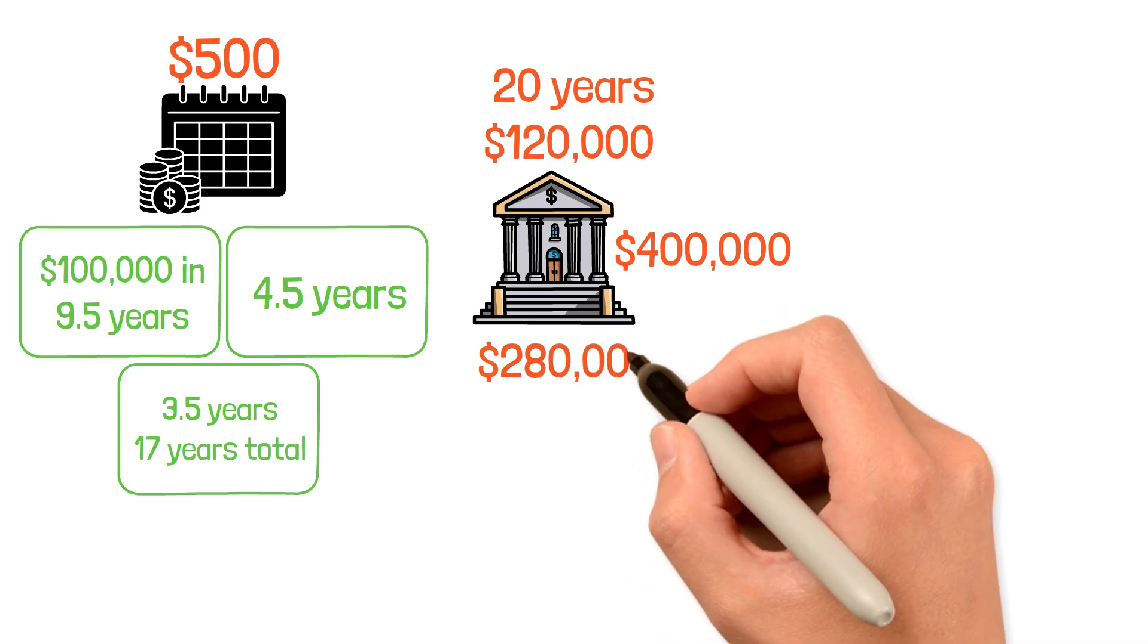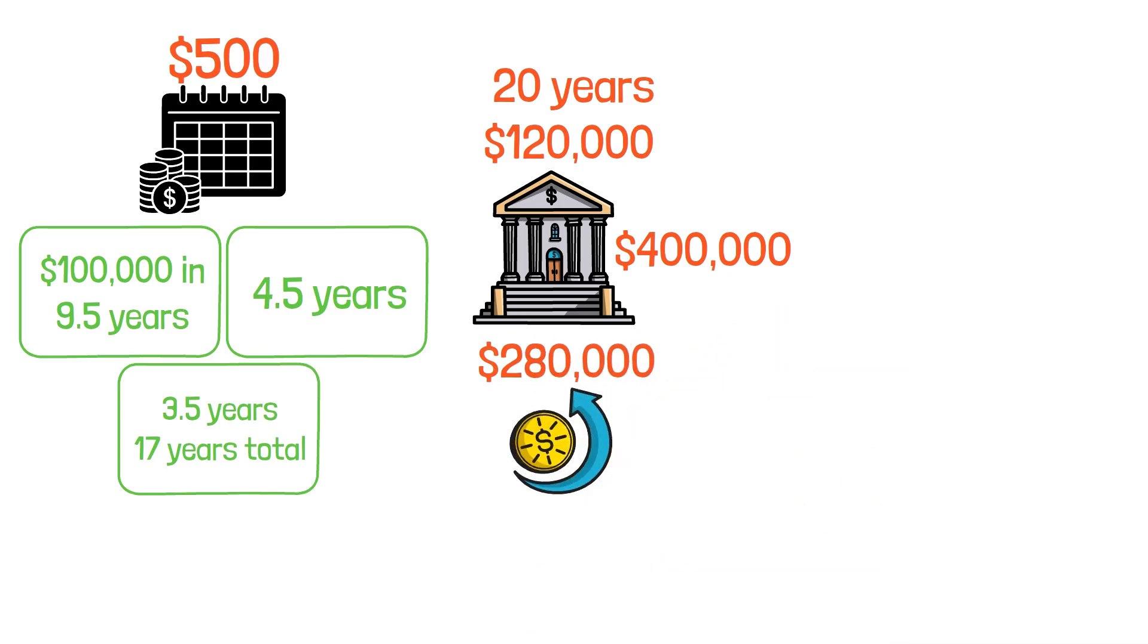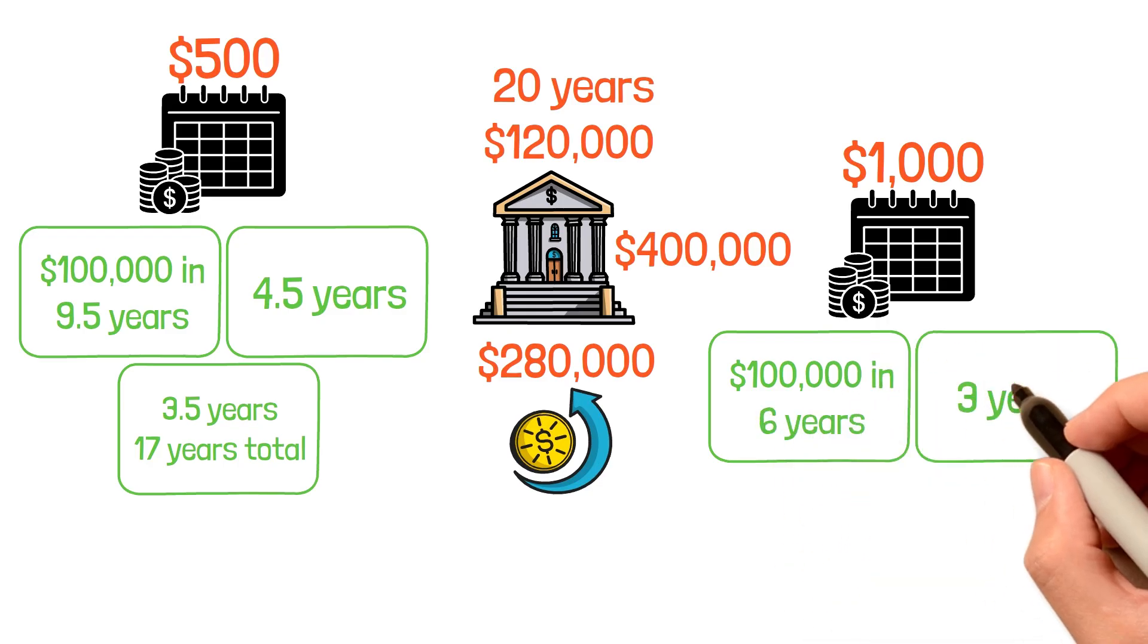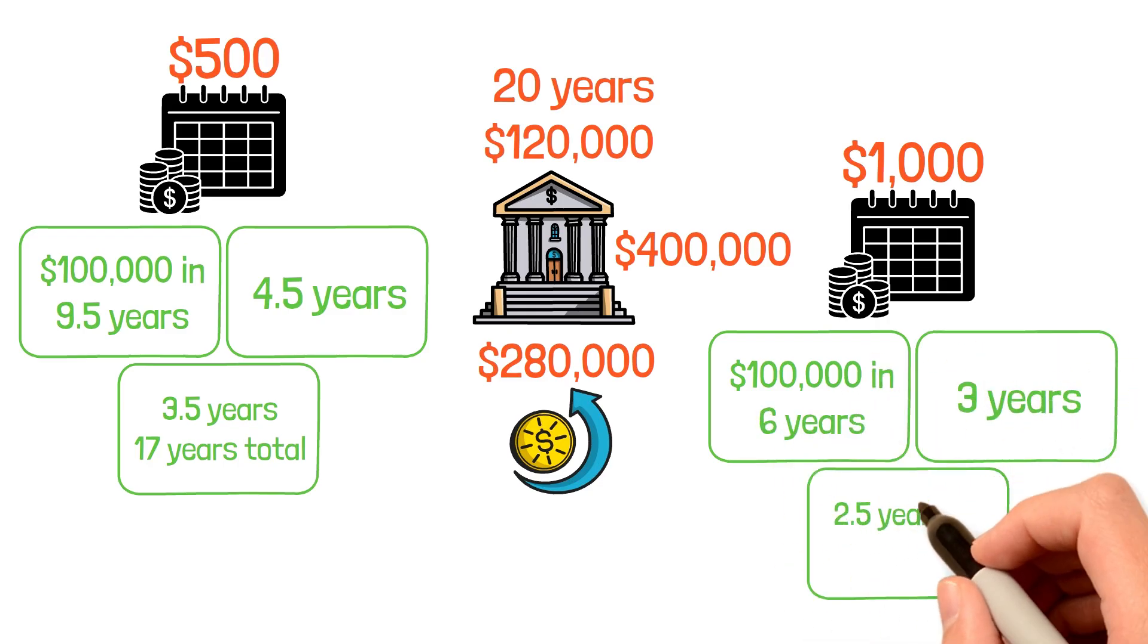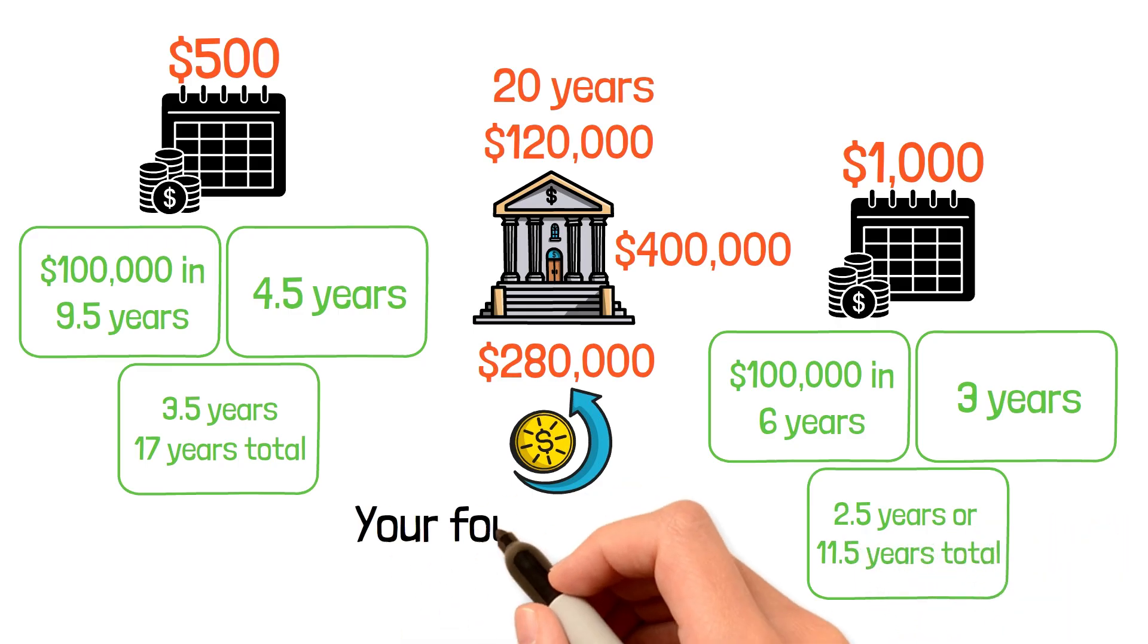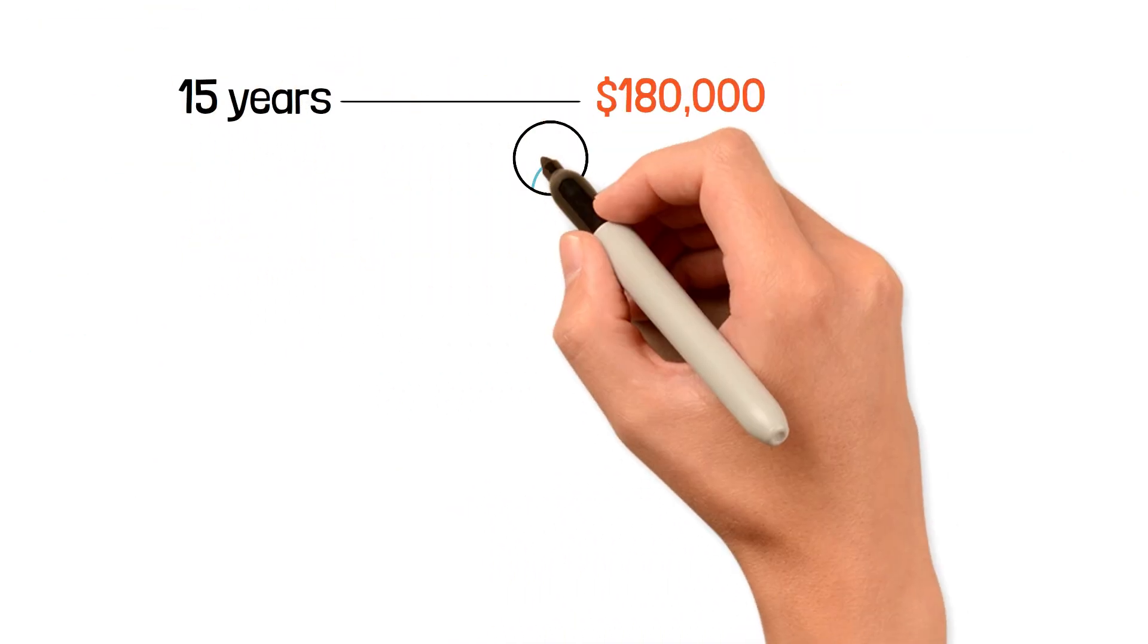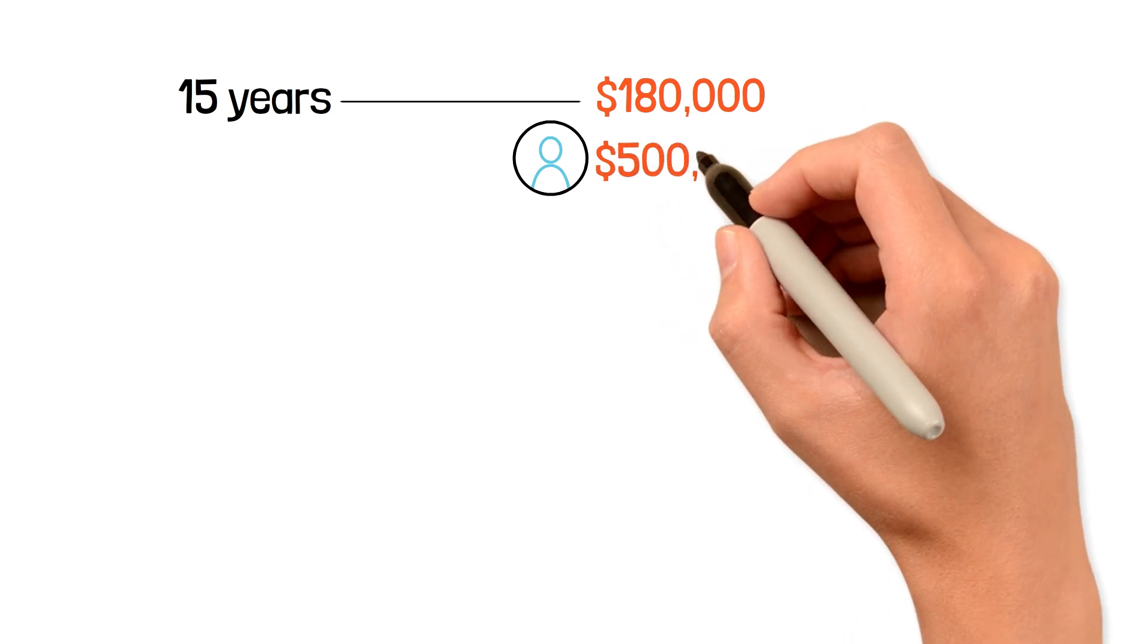With a $1,000 monthly investment, you achieve your first $100,000 in 6 years, the second 3 years later, and the third in 2.5 years or 11.5 years total. Your fourth $100,000, it only takes another 2 years. After 15 years, you've contributed $180,000, but your account is worth over $500,000. That's $320,000 in compound growth.